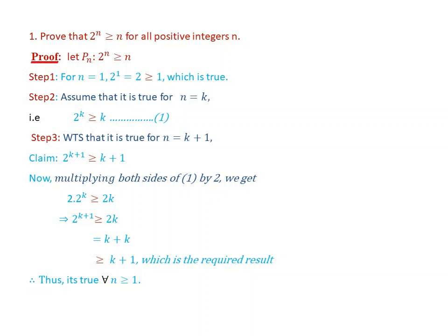The given proposition P(n) is: 2 to the power of n is greater than or equal to n. Now let us follow the Principle of Mathematical Induction. Step 1: For n equals 1, 2 to the power of 1 equals 2, and 2 is greater than or equal to 1, which is true.